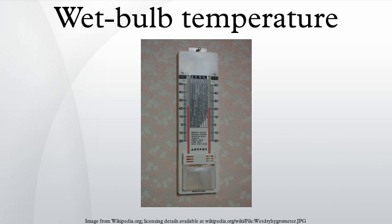The wet bulb depression is the difference between the dry bulb temperature and the wet bulb temperature. If there is 100% humidity, dry bulb and wet bulb temperatures are identical, making the wet bulb depression equal to zero in such conditions.